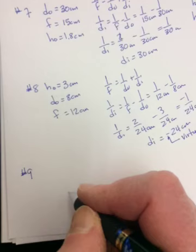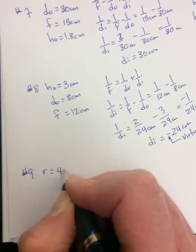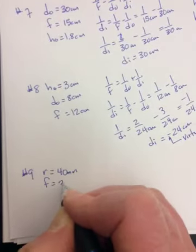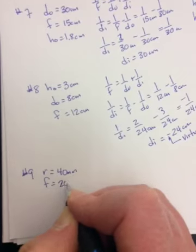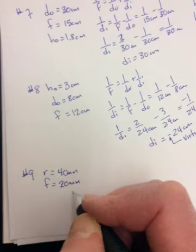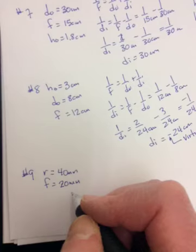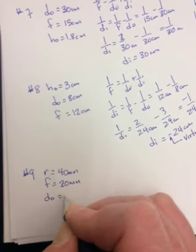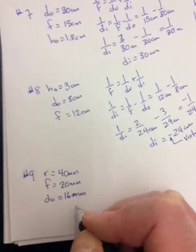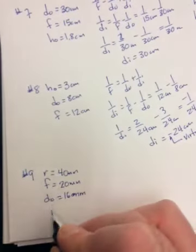Number 9. A dentist uses a small mirror of radius 40 millimeters, which means F is going to be 20 millimeters. To locate a cavity in a patient's tooth, if the mirror is concave and held 16 millimeters from the tooth, what is the magnification?